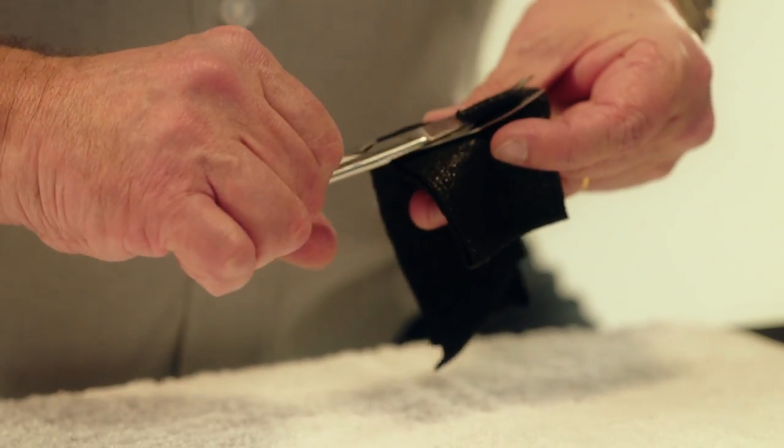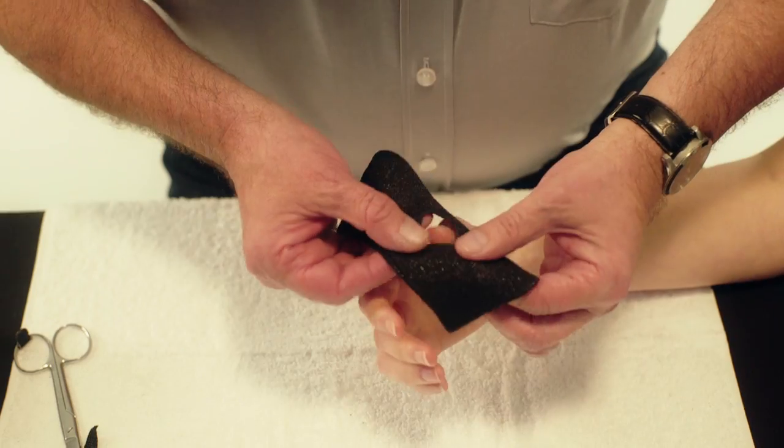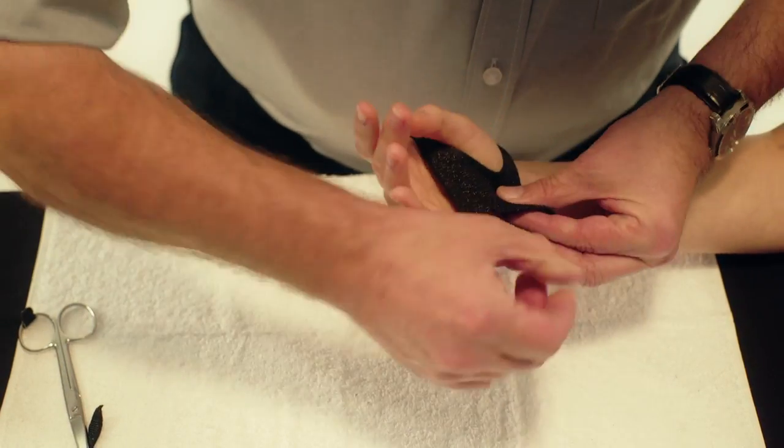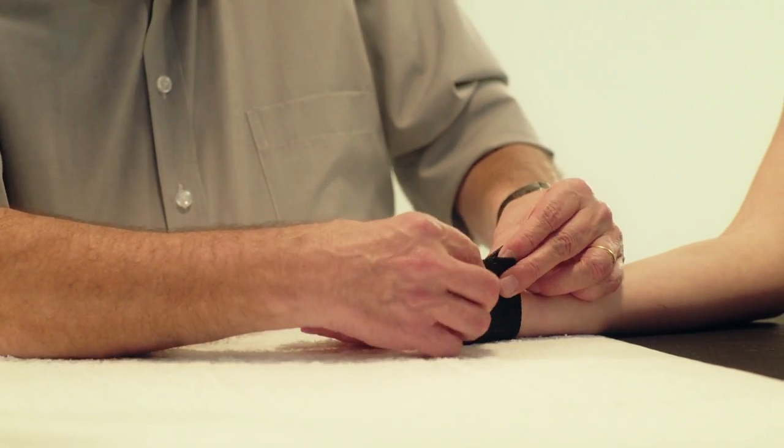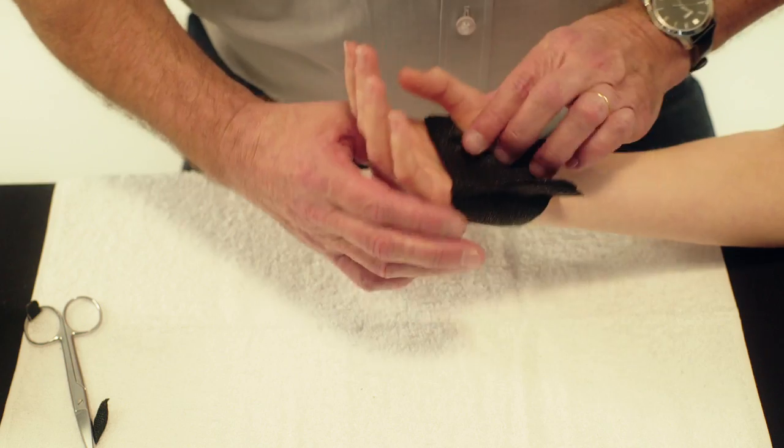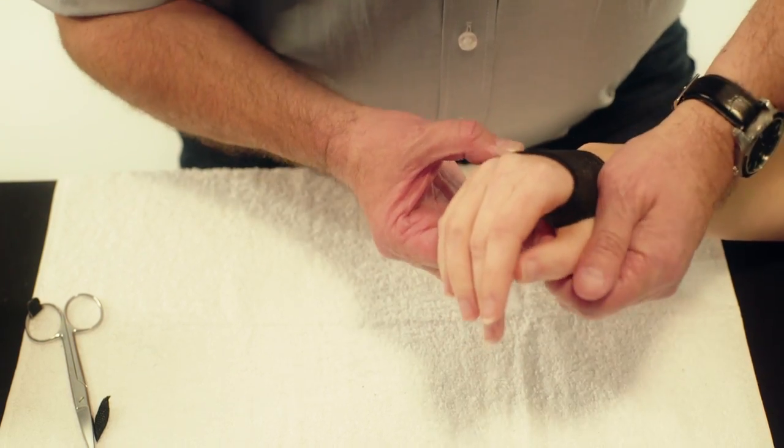Make a hole for the thumb at 2 thirds of the length and place the thumb through the hole. Pinch the OrphiCast together on the palmar side of the hand. Carefully mould the palmar arches.